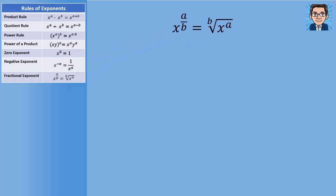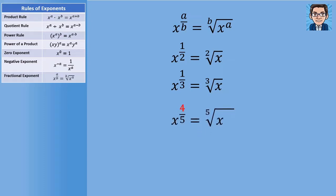The last rule addresses what we do when we have x raised to a fraction. The numerator is going to be the power and the denominator is going to be the root. So x to the one-half is the square root of x, and x to the one-third is the cube root of x. When the numerator is something other than one, we can either put the numerator inside as the power — the fifth root of x to the fourth — or take the fifth root of x and raise the whole thing to the fourth. It's important to know both ways since sometimes one is easier than the other.